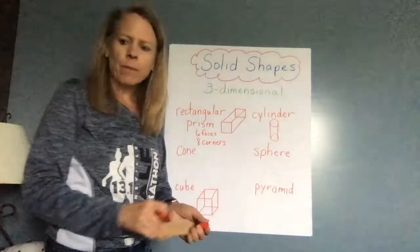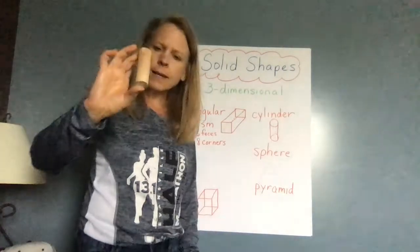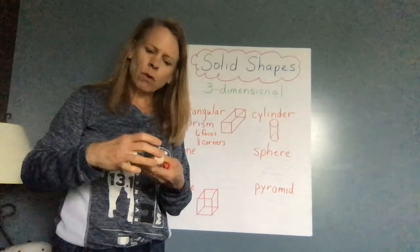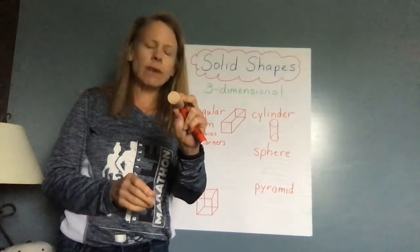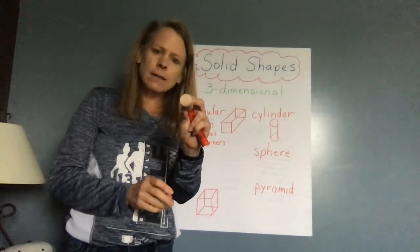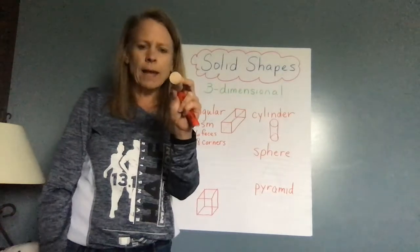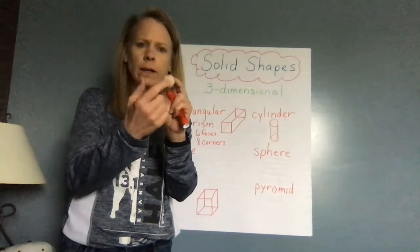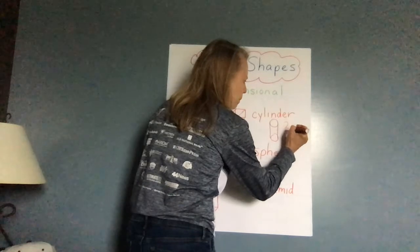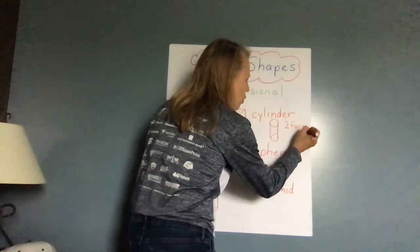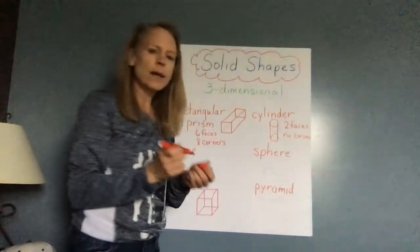The next shape I want to talk about is a cylinder. A cylinder is a shape that it can actually roll. The face of a cylinder is what shape? It is a circle. So it actually has two faces, one here and one on the other side. So it has two faces and no corners. The face is a circle of a cylinder.